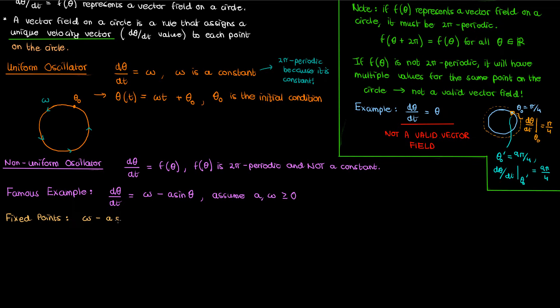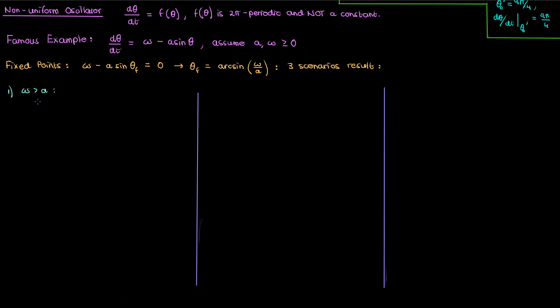Let's start by finding the fixed points of this dynamical system. Setting dθ/dt = 0 and solving, we find that the fixed point θ_f = arcsin(ω/a). This gives three scenarios for positive ω and positive a: if ω > a, we're taking arcsin of something greater than 1, which is impossible, so there are no fixed points. If ω = a, the fixed point is arcsin(1) = π/2 + 2πn — a single fixed point on the circle.